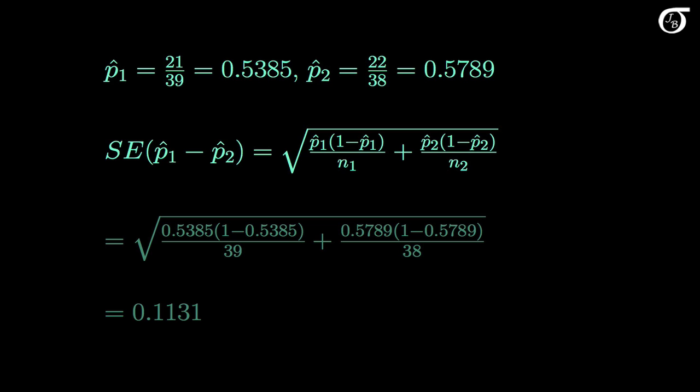Here are the sample proportions and the formula for the standard error. If we substitute in the values of p1 hat, p2 hat, n1 and n2, we end up with a standard error of 0.1131. I'm displaying all of the values to 4 decimal places, but if you're doing the calculations by hand, you should carry many decimal places throughout. Even better, leave the sample proportions as fractions in the calculations — that way you don't need to worry about rounding error.